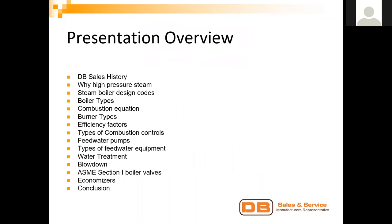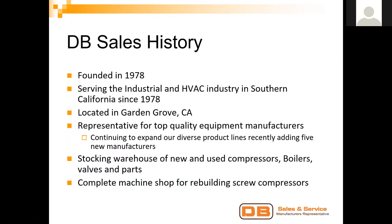Our presentation overview: we'll start with our history of DB Sales, talk about why we use high pressure steam, then go into steam boiler design codes, review different boiler types, combustion burner types, efficiency factors, types of combustion controls, feed water pumps, types of feed water equipment, water treatment, boiler blow down, ASME Section 1 boiler valves, economizers, and then our conclusion and questions.